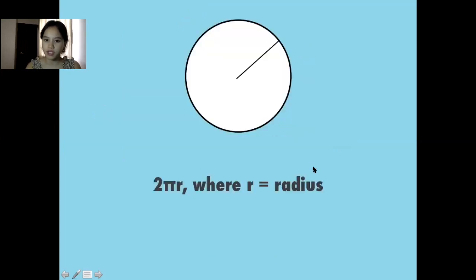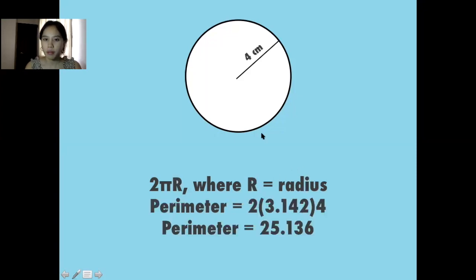What if the shape is a little something like this? A circle. So the formula of a circle is 2πr, where r is equal to the radius. So all you need to know here is its radius. For example, the radius we have here is 4 centimeters. So all you need to do is plug in the value of 4 into the formula. So 2 times 3.142, which is always the value of pi, times 4. And when you multiply all of that together, you get the perimeter of the circle, which is 25.136 centimeters.